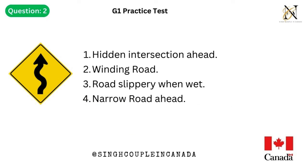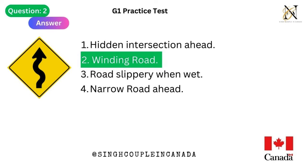Question 2. This traffic sign means: 1. Hidden intersection ahead. 2. Winding road. 3. Road slippery when wet. 4. Narrow road ahead. Answer is 2. Winding road.